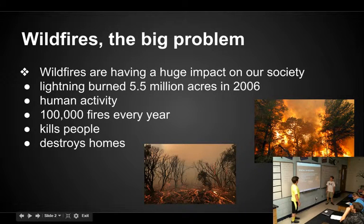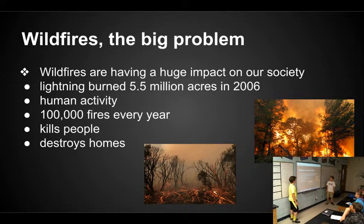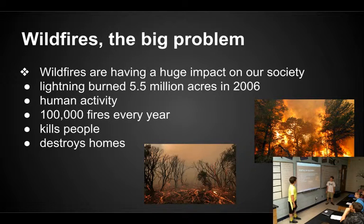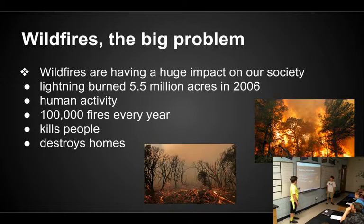In 2006, lightning burned 5.5 million acres. Lots of fires are also caused by human activity, and there are 100,000 fires every year. Fires kill people and they destroy homes.